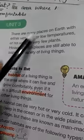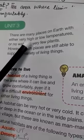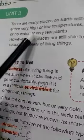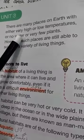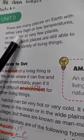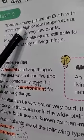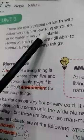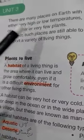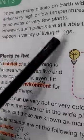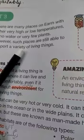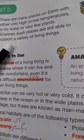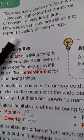There are many places on earth with either very high or low temperatures, or no water, or very few plants. However, such places are still able to support a variety of living things. But even in such places, there are many living things that are rare.